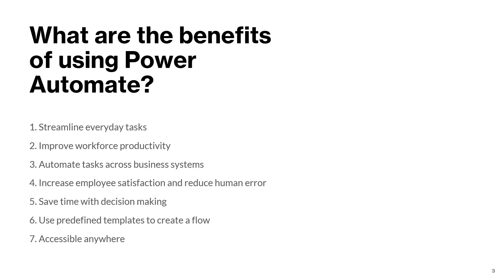Increase employee satisfaction and reduce human error. When the automation is doing something, there are almost zero chances for it to make mistakes. Because as a human, if you are doing something repeatedly all day long, there are chances you can make errors — but that is not the case with an automation or a software bot.